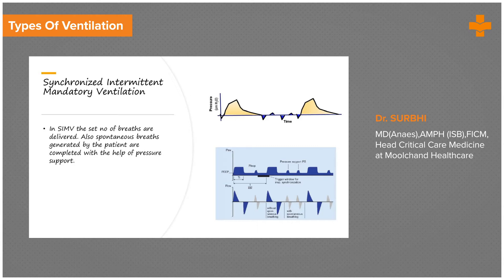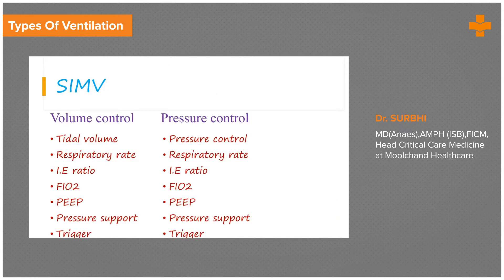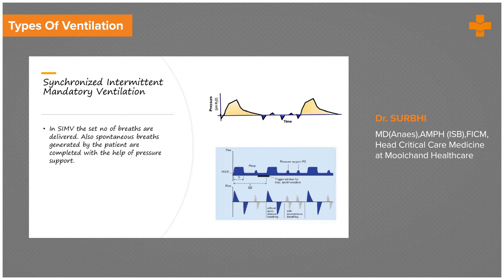In Synchronized Intermittent Mandatory Ventilation (SIMV), unlike Assist Control where the ventilator did all the work after triggering, the ventilator delivers its set breaths at a set rate, but in between, if the patient tries to breathe, it recognizes the breath as per the trigger and supports it — usually with a set pressure support. So in SIMV, in addition to volume control or pressure control settings, we also set a pressure support. This pressure support kicks in when the patient tries to breathe mid-cycle, supporting up to a pre-set pressure to generate a tidal volume.